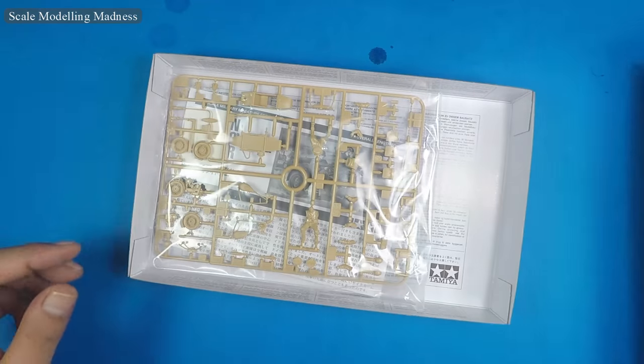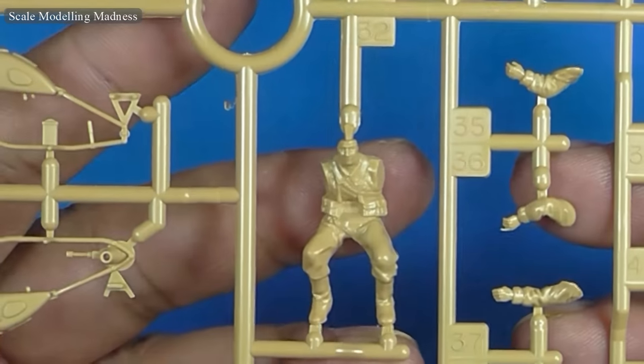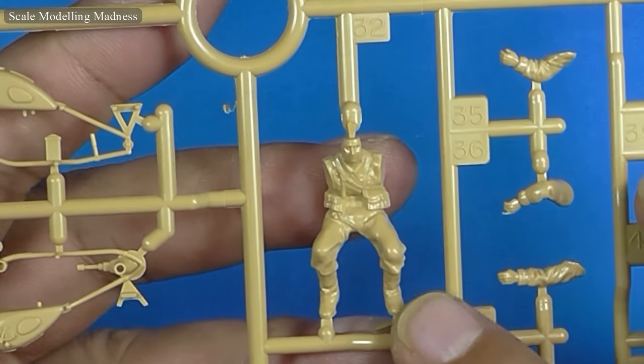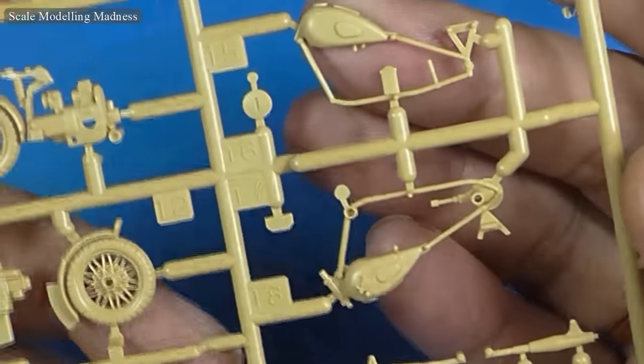Let's take a look inside the box. All the parts are on one sprue so this should be a relatively quick build. The parts are crisp and nicely molded something one has come to expect from Tamiya. The level of detail is excellent even for such a small vehicle.